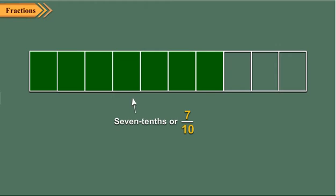Now observe this rectangle. It is divided into ten equal parts, and out of them, seven parts are shaded. Therefore, the shaded part is seven tenths of the whole. It is written as seven upon ten and read as seven upon ten.